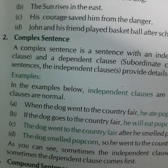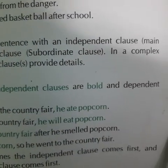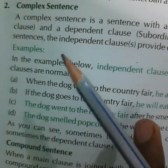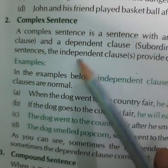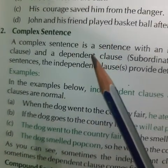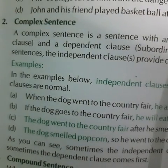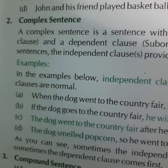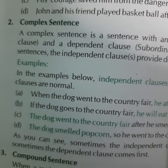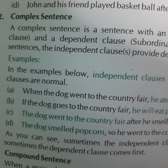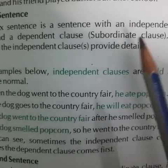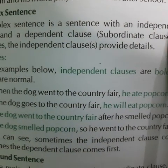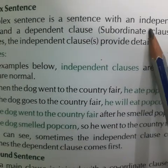Next is the complex sentence. A complex sentence is a sentence with an independent clause — also called the main clause — and a dependent clause, also called the subordinate clause. In a complex sentence, the independent clause provides the main details. We have two clauses: one is the dependent clause and one is the independent clause. A clause is a group of words. The independent clause has a meaning by itself.